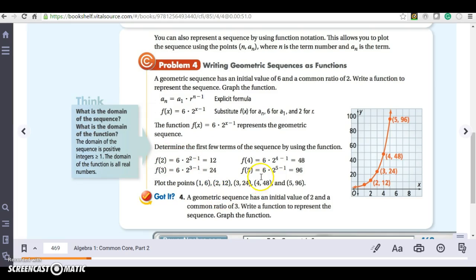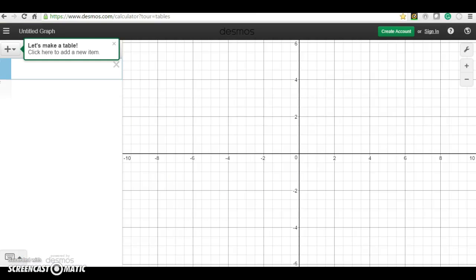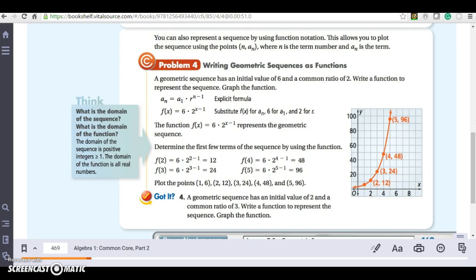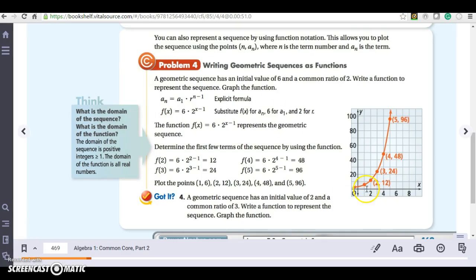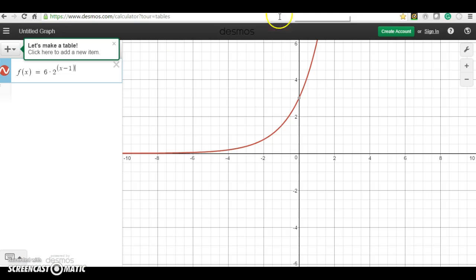I can plot points and graph it. Using the free graphing calculator at www.desmos.com, I'll enter 6 times 2 to the x minus 1. Let me put this in parentheses. Okay. And so this is the same graph that they got as well. We can plot a few points if we want.